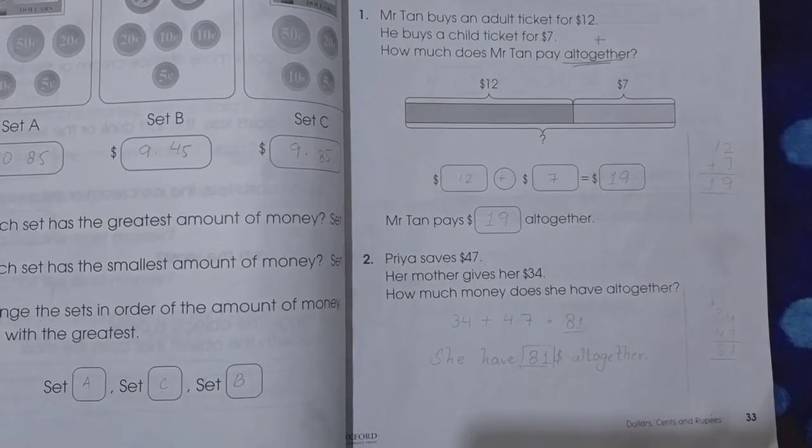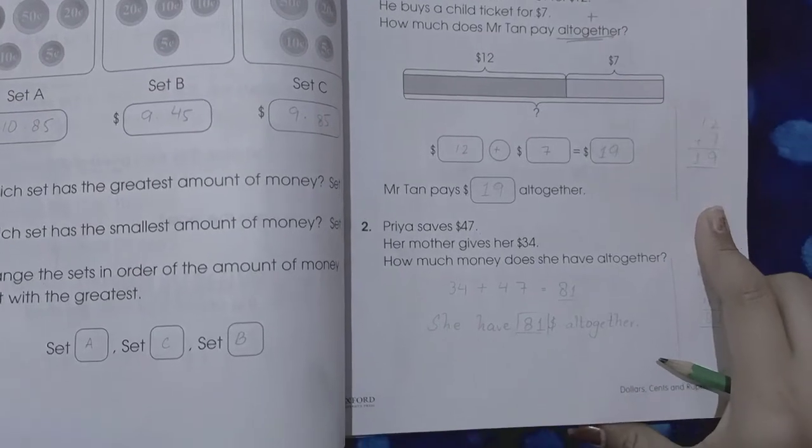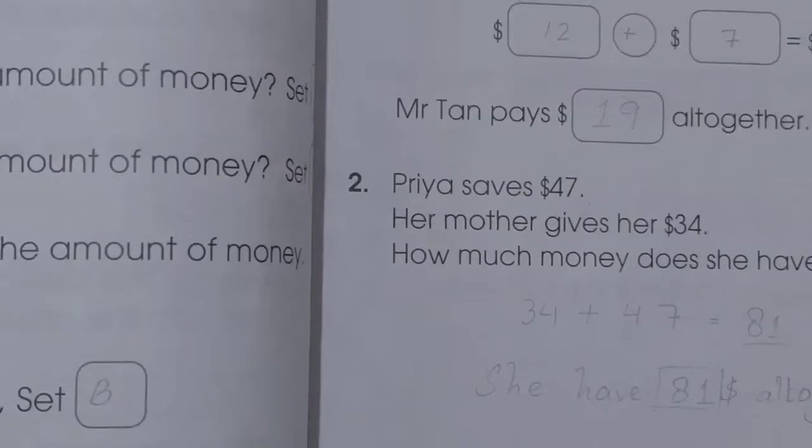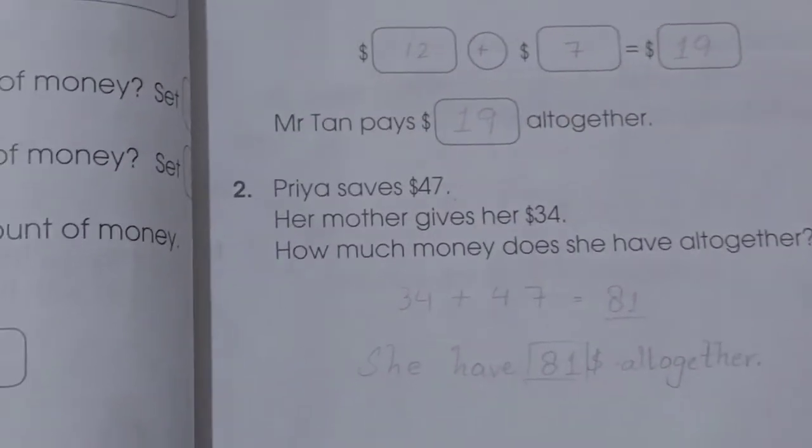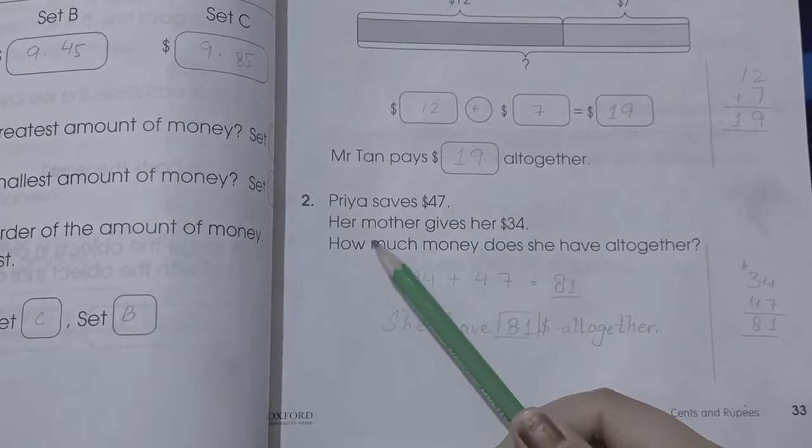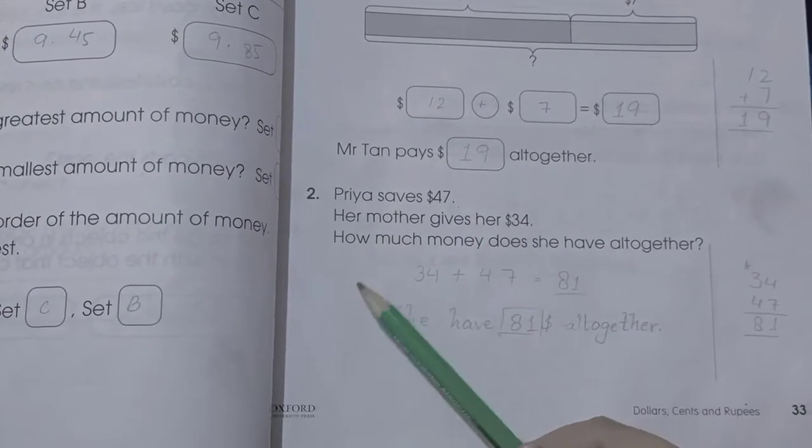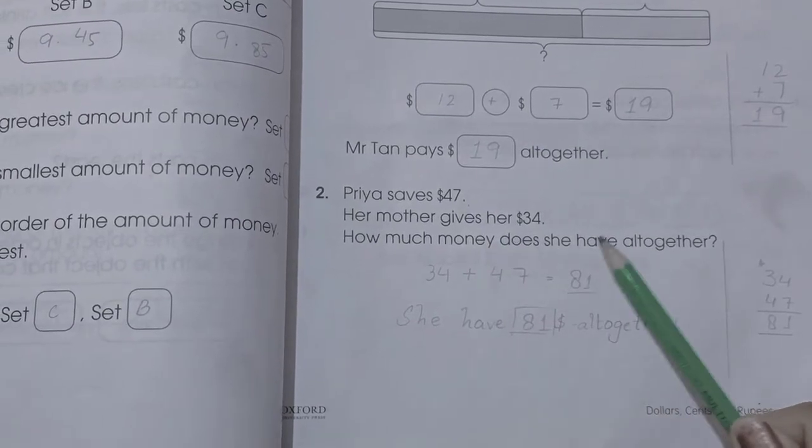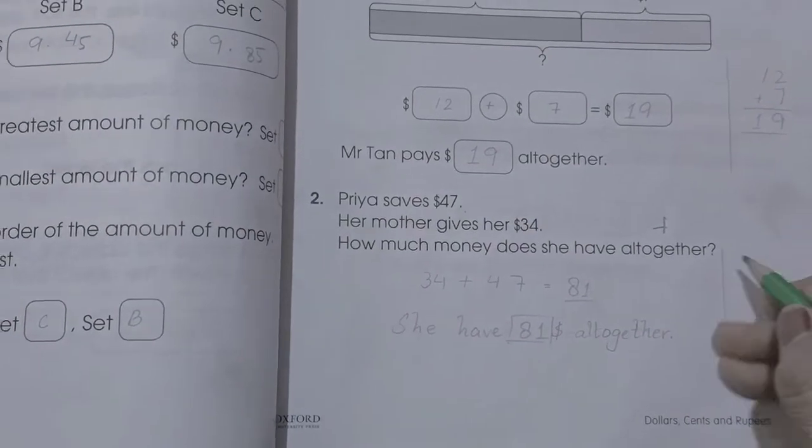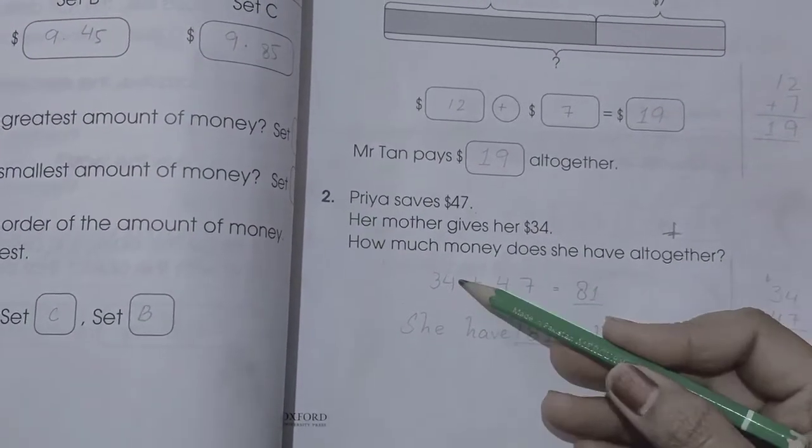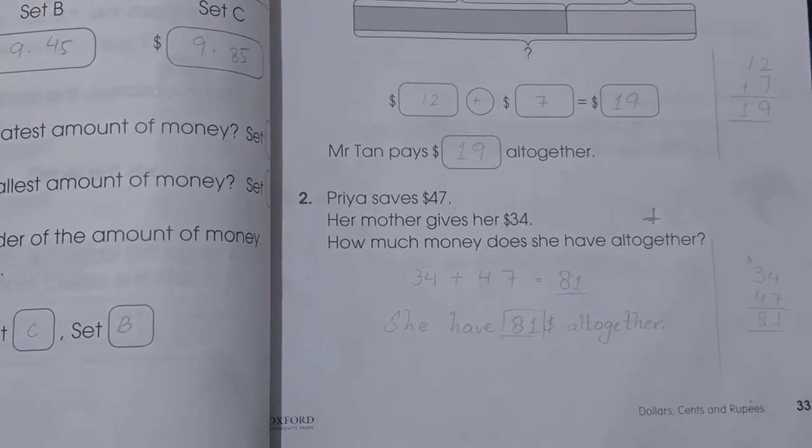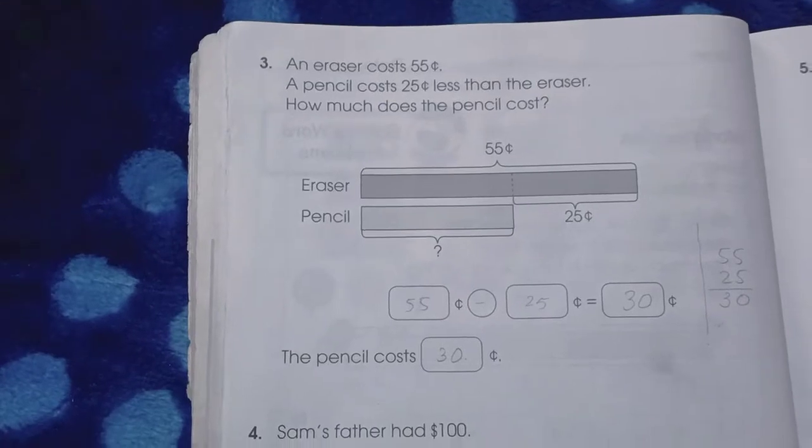Number two: Priya saves $47. Her mother gave her $34. How much money does she have altogether? Again, altogether means we have to add the numbers. So 34 plus 47 is 81. She has 81 dollars altogether.